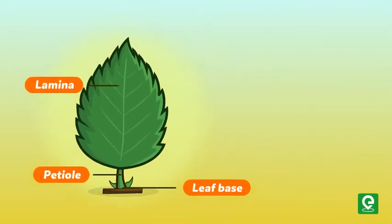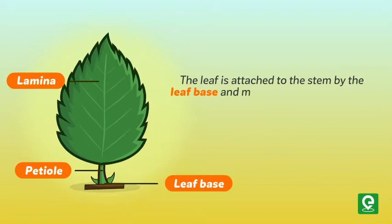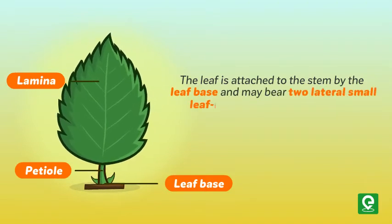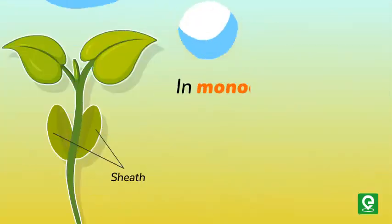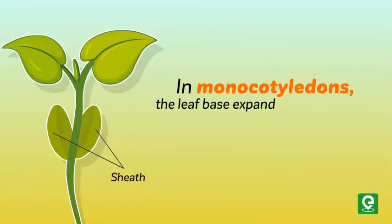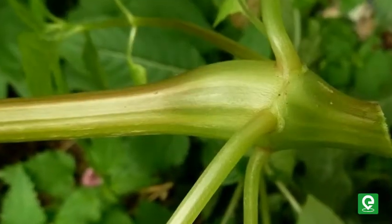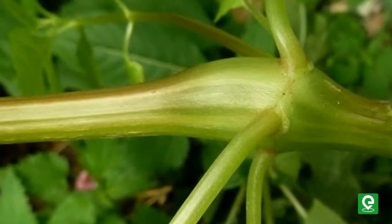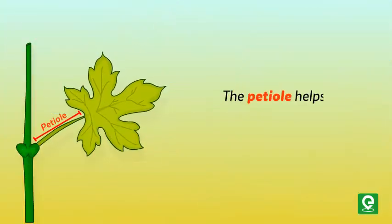The leaf is attached to the stem by the leaf base and may bear two lateral small leaf-like structures called stipules. In monocotyledons, the leaf base expands into a sheath covering the stem partially or wholly, while in some leguminous plants the leaf base may become swollen, which is called the pulvinus.